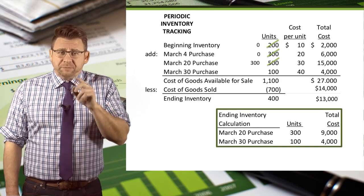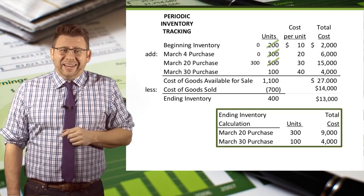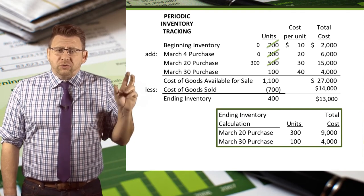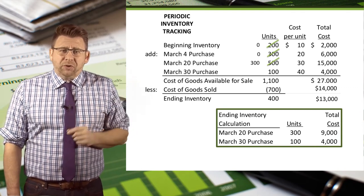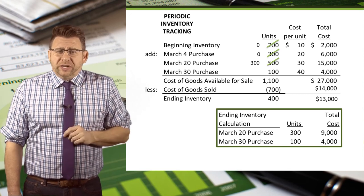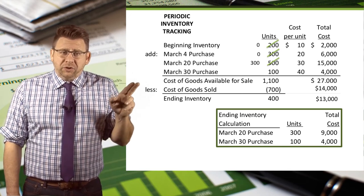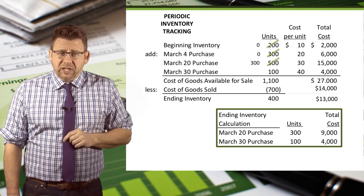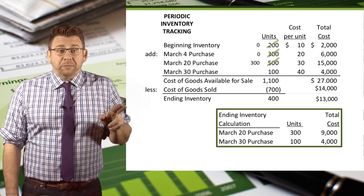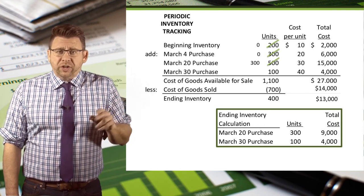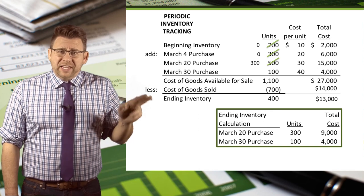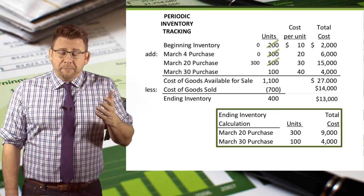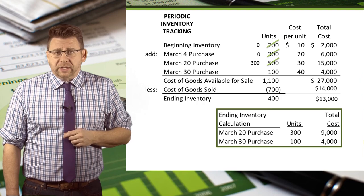We could have proved this by using the ending inventory units as well. Since 400 units remain in ending inventory — 300 units remaining from the March 20th purchase and 100 units from the March 30th purchase — you can see that those total $13,000, which matches what we've already calculated.